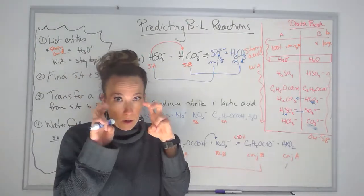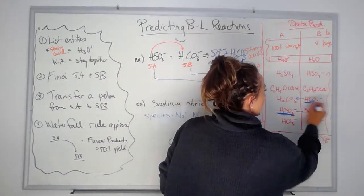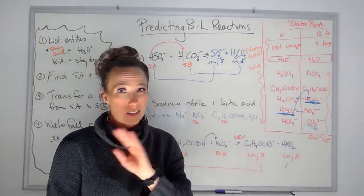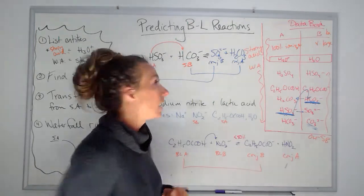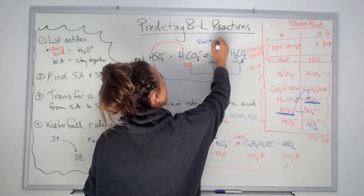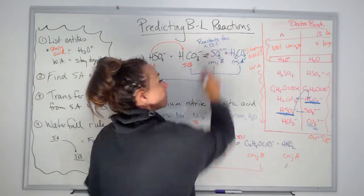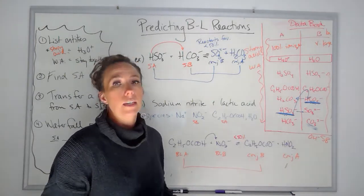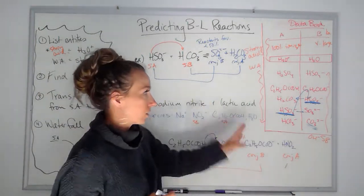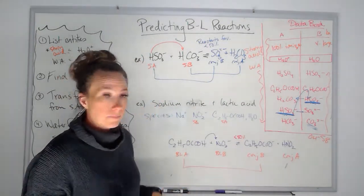Is this spontaneous? This is my strongest acid, and this is my strongest base. The waterfall is going uphill here, so it's non-spontaneous. I can't write that — I have to write that my reactants are favored, or that the yield will be less than 50%, because that forward reaction is not very spontaneous.